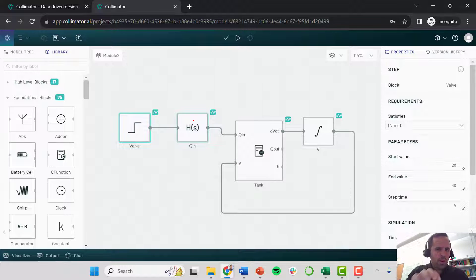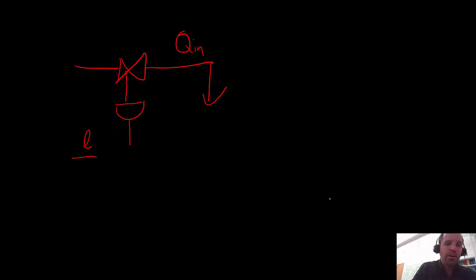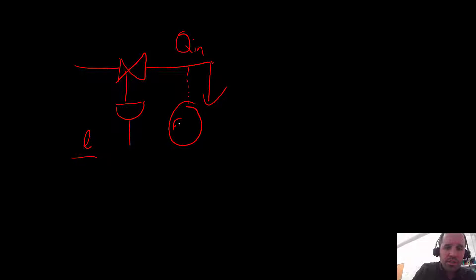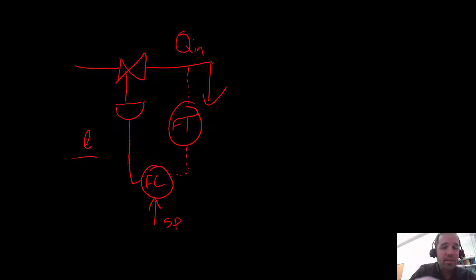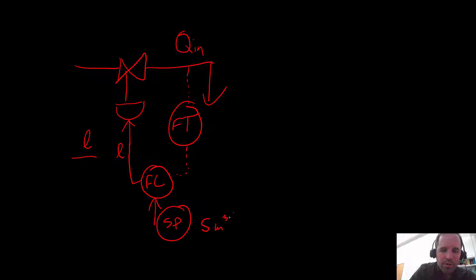Instead of specifying valve position, we want to tell our system we want a particular flow rate — say five cubic meters per minute. The answer is to add a controller. Specifically, we would first measure our flow rate using something like a flow transmitter. We'd send that signal to a flow controller, which takes in a set point. Once it has the set point, it pushes a command — our lift or valve position — to the actual valve. So we'd give it a set point of something like five cubic meters per minute.